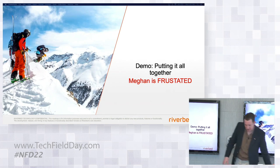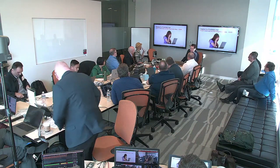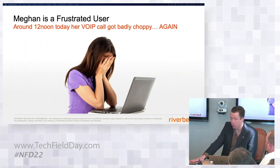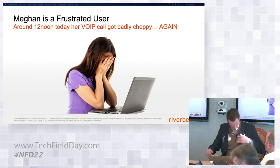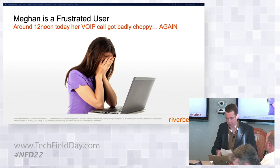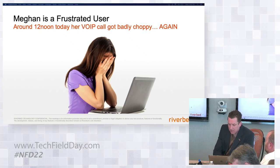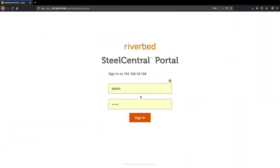So let's do the demo. The story goes as follows: Megan is frustrated because she's running into performance problems on the network. She's had some of her calls get badly choppy and it happened around 12 o'clock today. What I'm actually going to do is a demo of a scenario that I helped a customer with in real life — obviously this isn't their data, it is our data, but this is roughly how that investigation went down. Megan is in Boston.